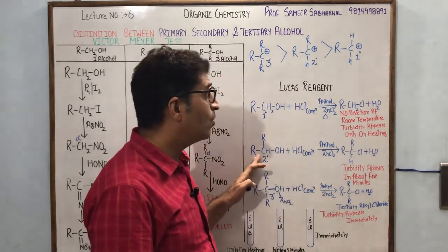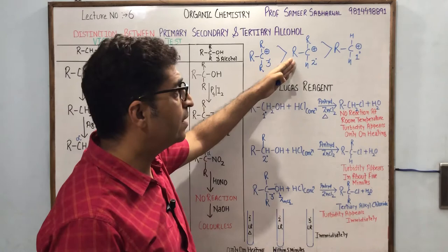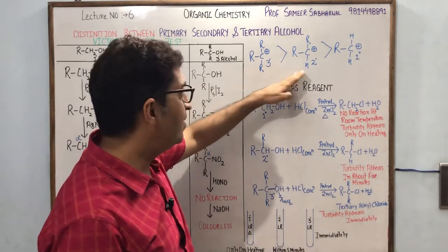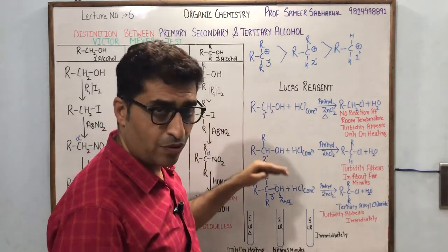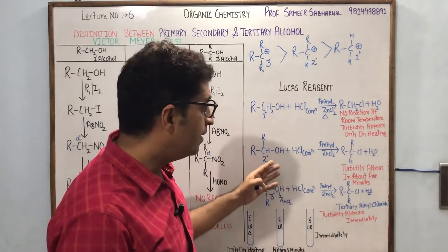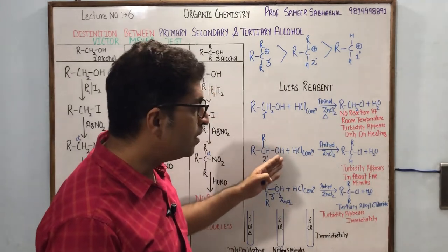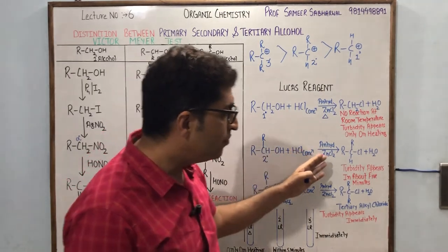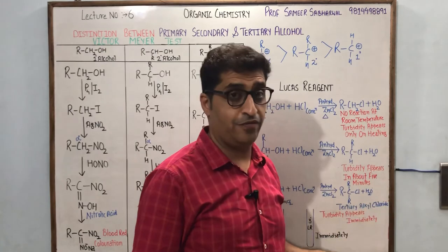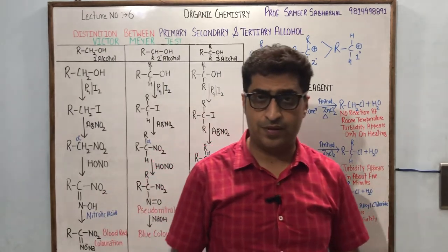For secondary alcohol we have a 2° carbocation, which is relatively less stable than the 3° carbocation. The procedure is the same, and in this case turbidity appears within 5 minutes, confirming the presence of secondary alcohol.